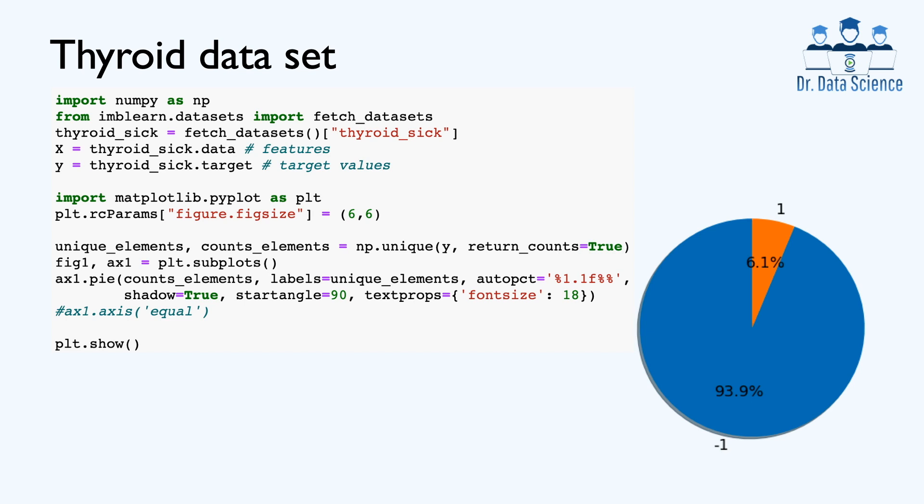Here, we can see how to import this data set and find features that we store as a two-dimensional array called X. Remember, each row represents a patient, and each column corresponds to a feature. We also store the target values, which are plus 1 or negative 1, in a separate 1D array called Y.